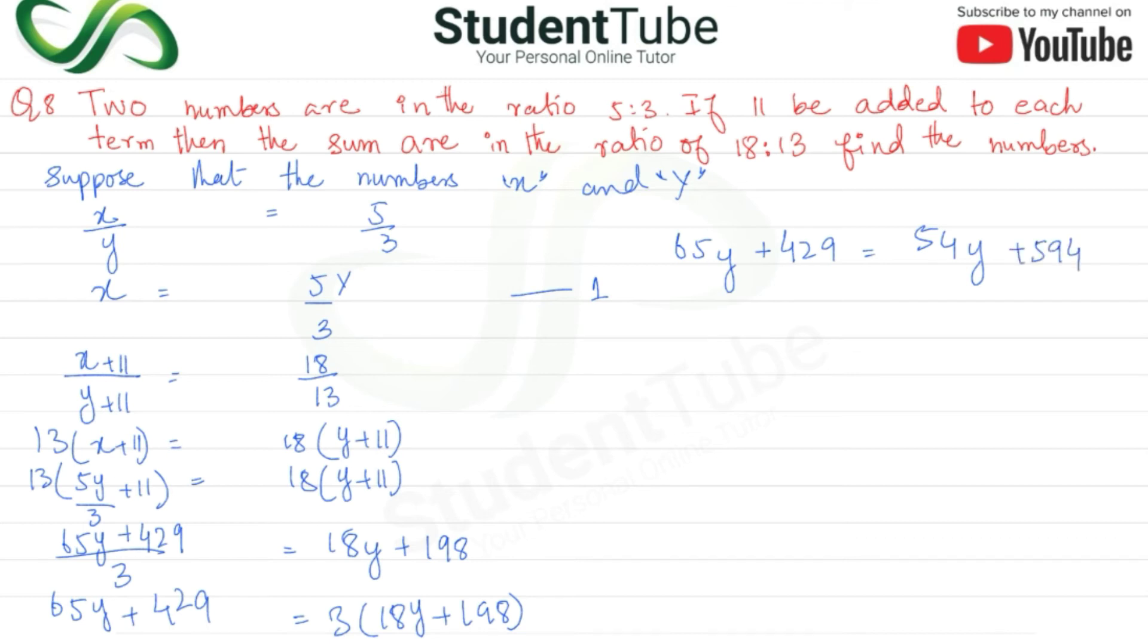So, यहाँ पर y एक तरफ ले लेते हैं जो numbers हैं वो एक तरफ ले लेते हैं. So, 65y minus 54y is equal to 594 minus 429. तो यहाँ पर बज गए 11y is equal to 165. अब यहाँ पर y is equal to 165 upon 11. So, y is equal to दोनों को डिवाइड किया 15 आया. अब y क्या आगया 15.